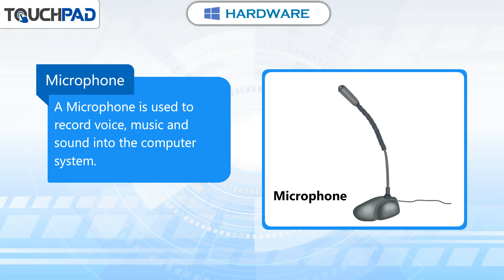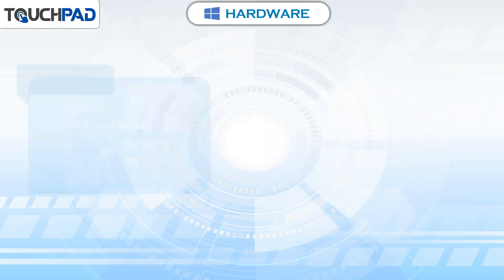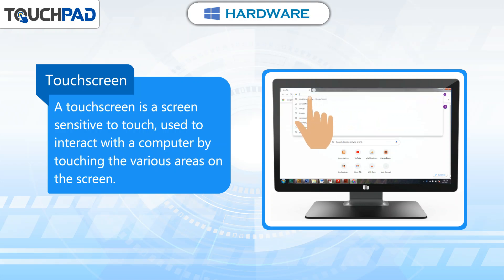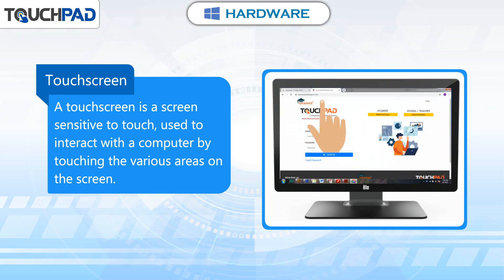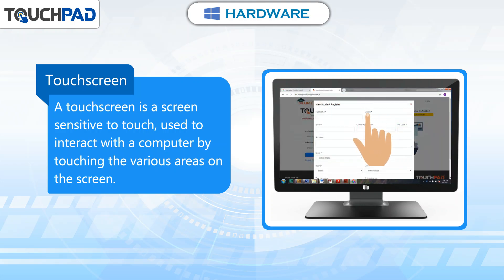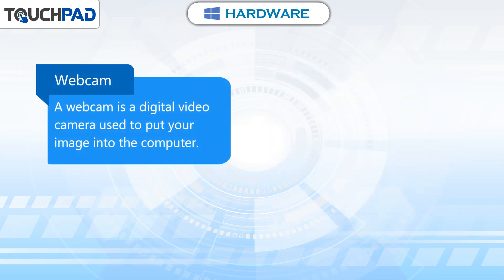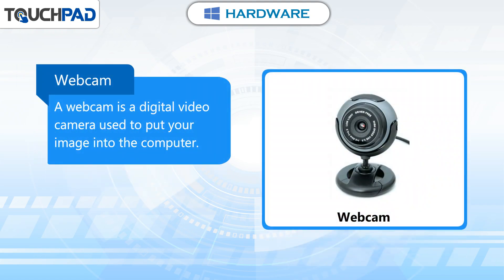music and sound into the computer system. Touch screen. A touch screen is a screen sensitive to touch, used to interact with the computer by touching the various areas on the screen. Webcam. A webcam is a digital video camera used to put your image into the computer.